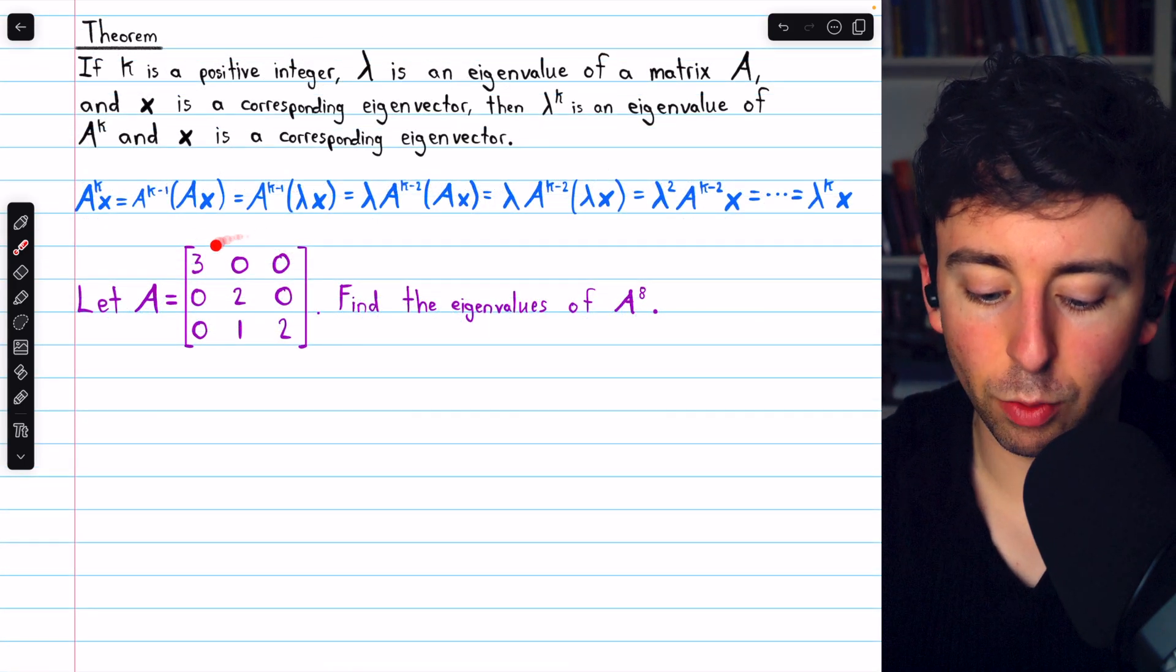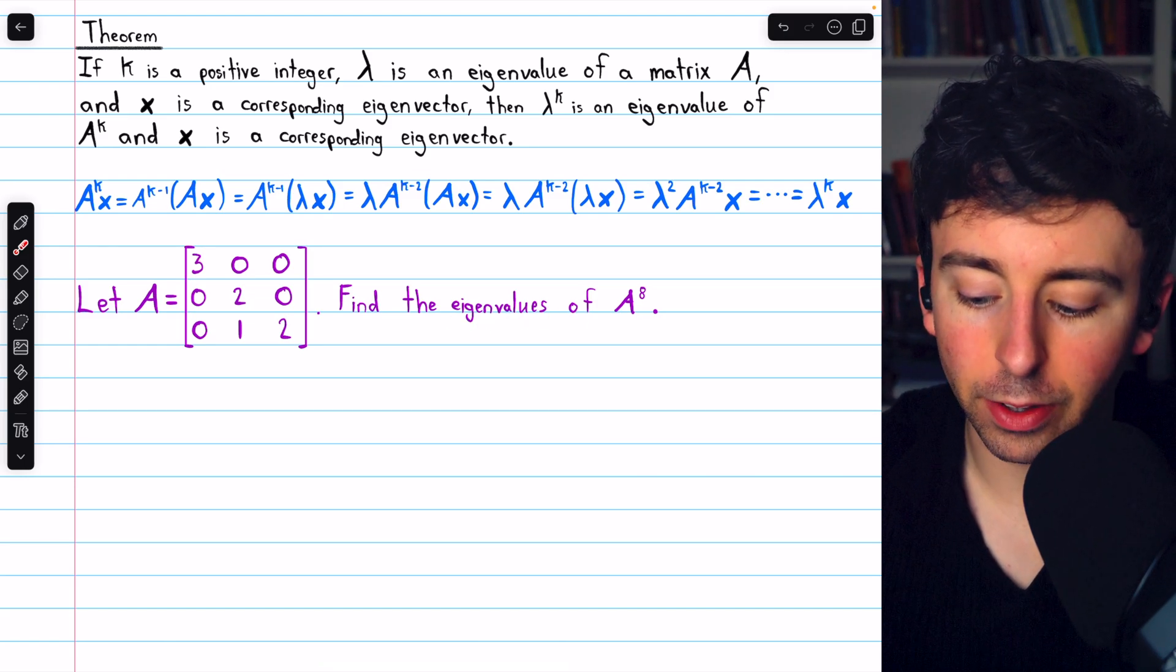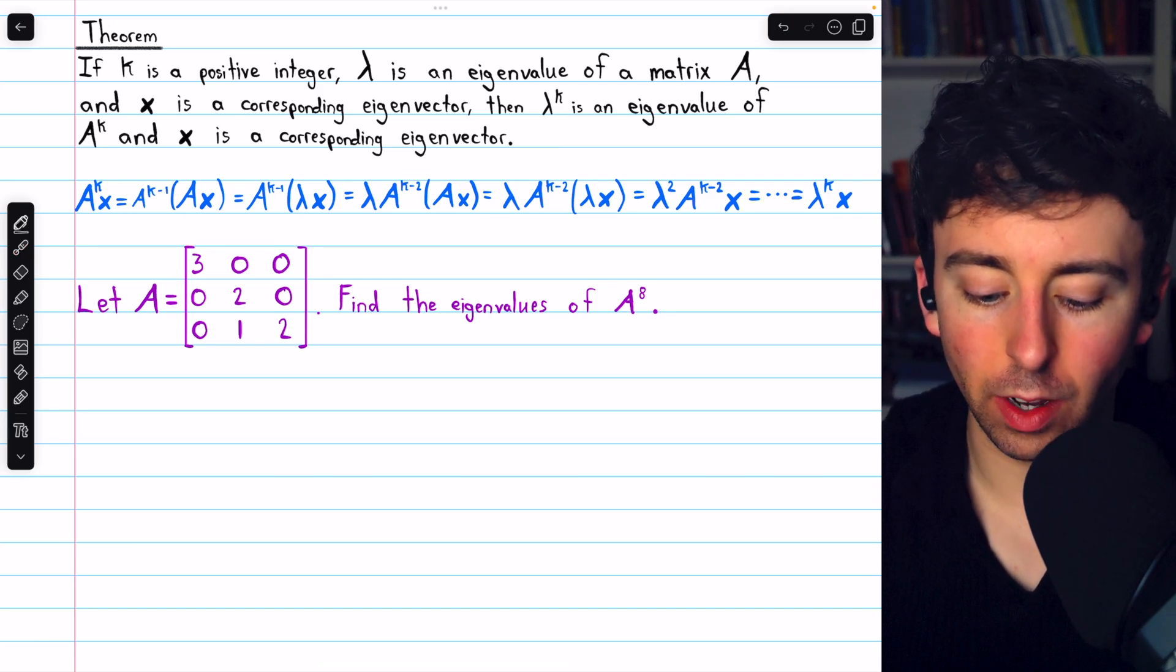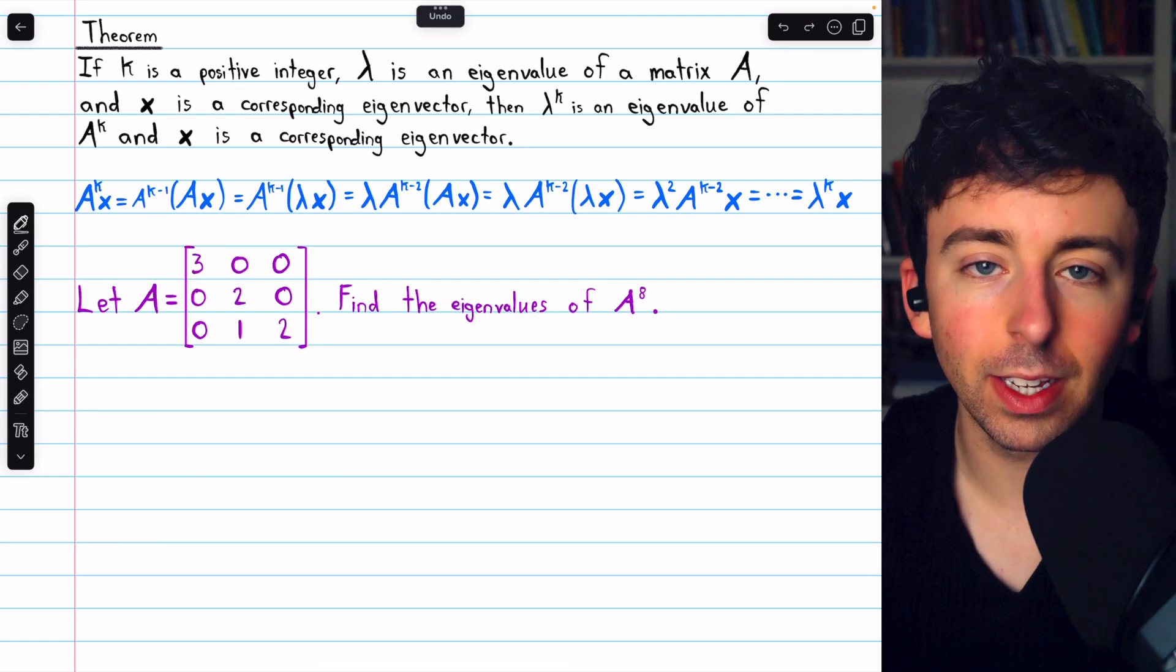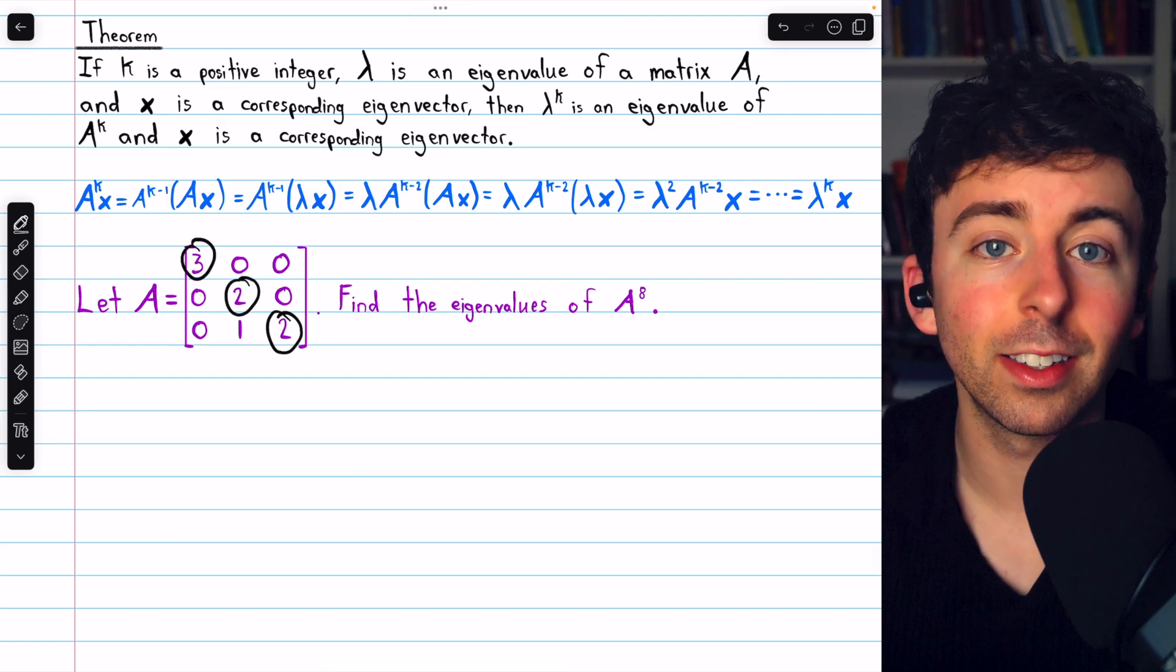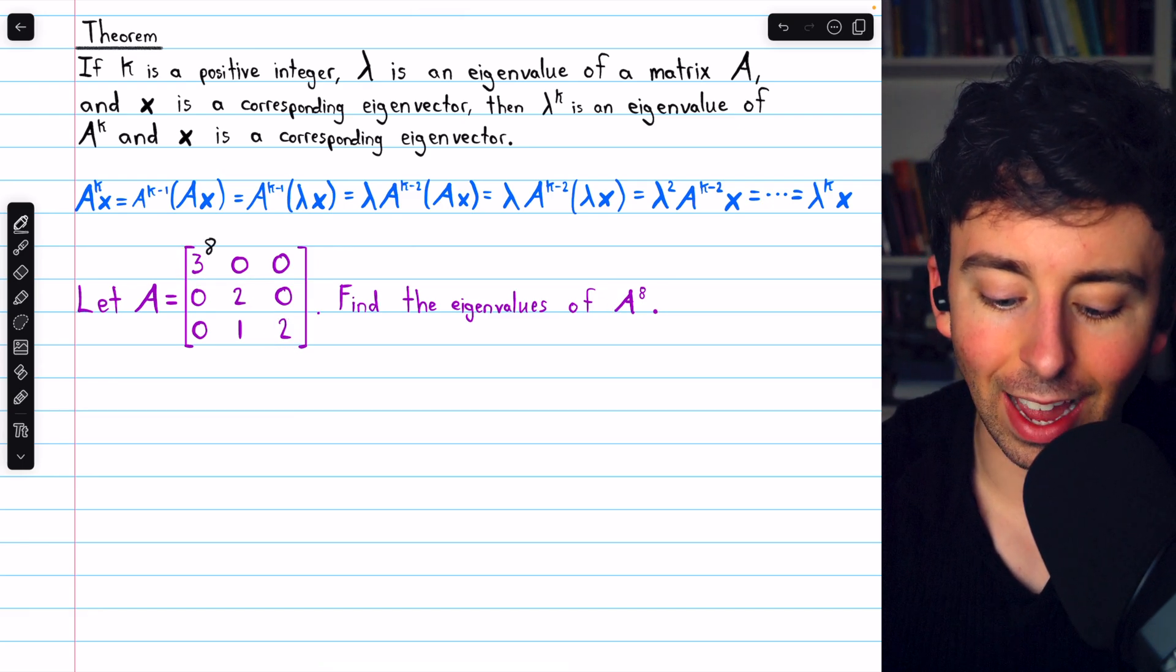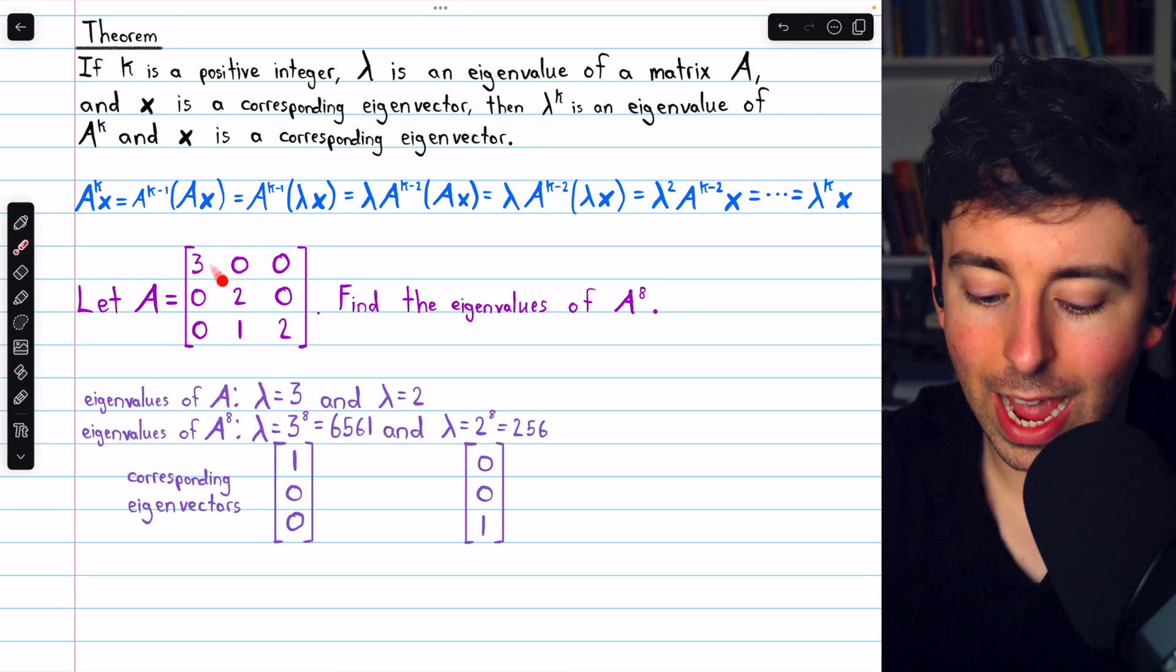For example, if we have this 3 by 3 matrix A, suppose we want to find the eigenvalues of A to the 8. Well, it's very easy to find the eigenvalues of A. Since A is a lower triangular matrix, its eigenvalues are just its diagonal entries: 3, 2, and 2. And so we can find the eigenvalues of A to the 8 by raising these eigenvalues to the power of 8. So those are the eigenvalues of A. Hence, the eigenvalues of A to the 8 are 3 to the 8, which is that, and 2 to the 8, which is that.